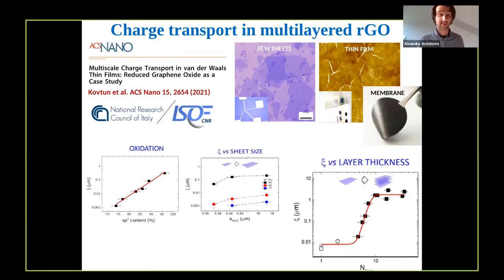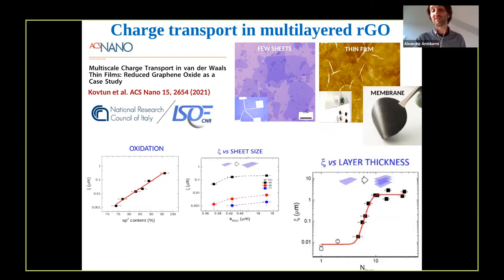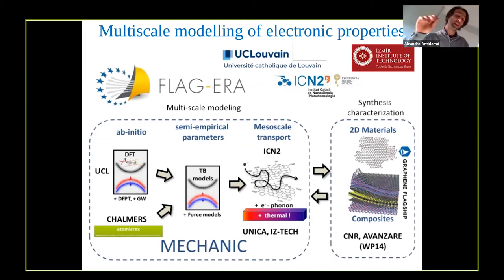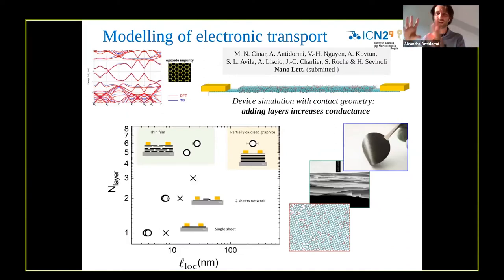The best result of the work is that the authors observe an anomalous transition change in the localization length when the number of layers of graphene oxide exceeds three or four. In other words, they observe an increase of conductance in graphene oxide structures when many layers are put one on top of the other. Within a Flakira project with partners from Turkey, Belgium, Sweden and others, we exploited our computational capabilities to explain this conundrum.